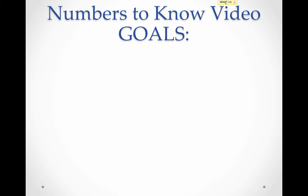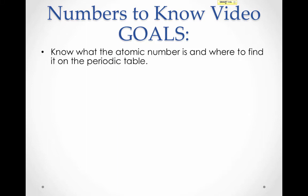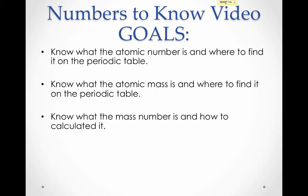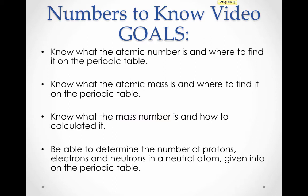Welcome to Unit 6, Video 2: Numbers to Know. By the end of this video, you should know what the atomic number is and where to find it on the periodic table. You should know what the atomic mass is and where to find it on the periodic table. You should know what the mass number is and how to calculate it. And you should be able to determine the number of protons, electrons, and neutrons given the information on the periodic table.